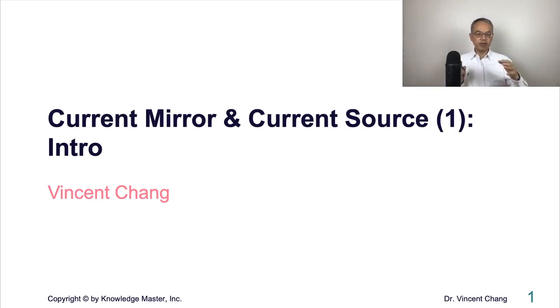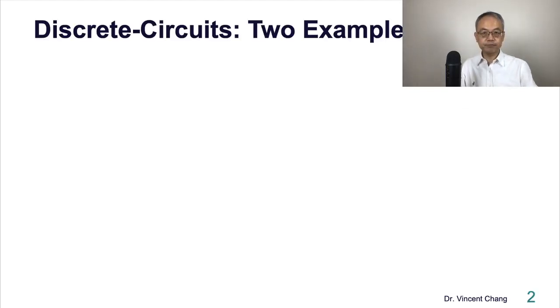I've prepared about 12 lecture videos around this topic. Current mirror and current source is very important in analog integrated circuit design. First part, part one, introduction. Let's start with a concept from discrete circuit design. Let me show you two examples.